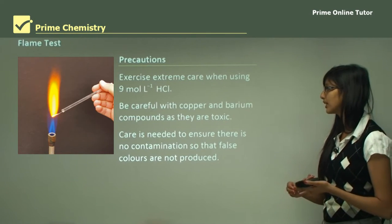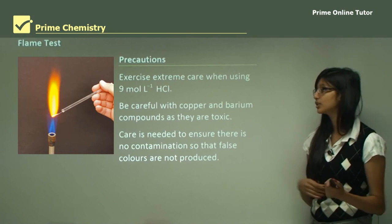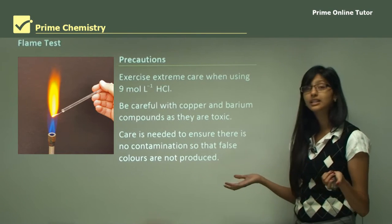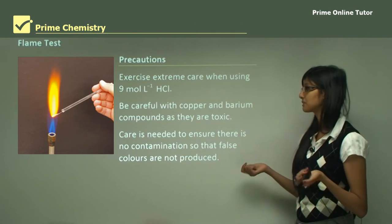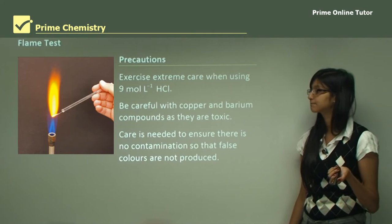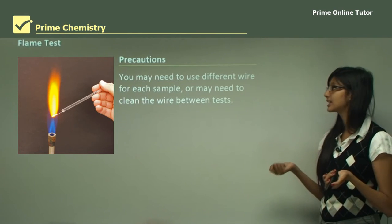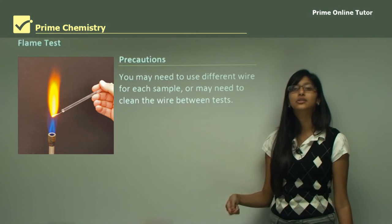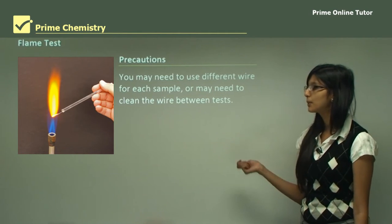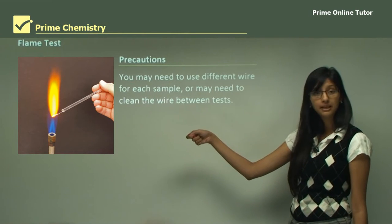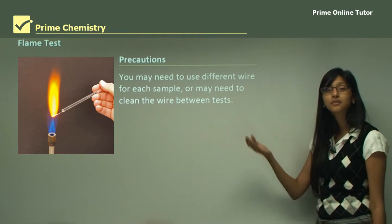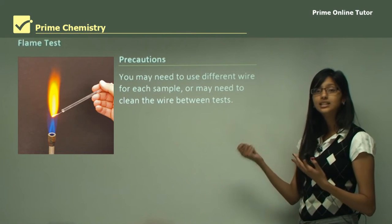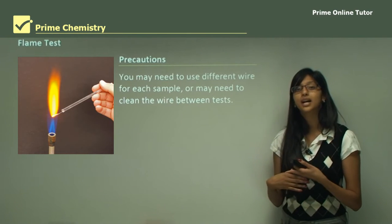Care should also be taken to avoid contamination, because you do not want wrong results — you want the cations to produce the correct flame color. If there is contamination, your sample might not produce the expected flame color. You may need to use a different wire for each sample, or clean your wire between tests using concentrated hydrochloric acid. Dip the wire in the acid and then place it in the flame to clean it before testing the next metal.